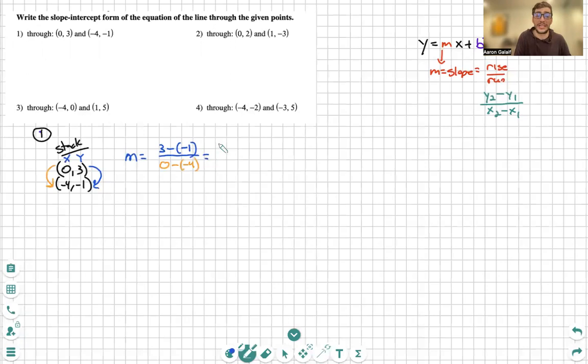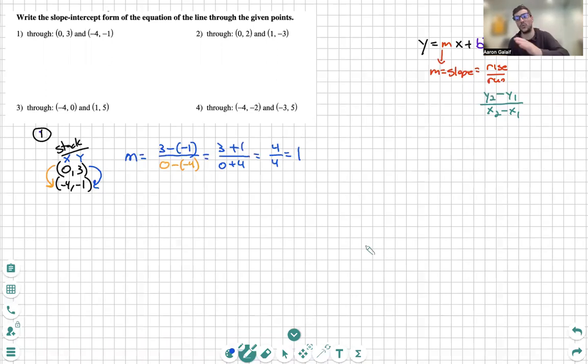Now, we clean it up because we know when we have a minus a negative number that becomes a positive. Three plus one is four. Four plus zero is four. Simplifying, we get my m is equal to one.